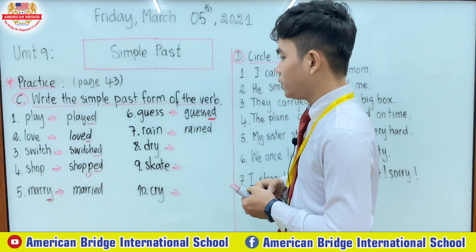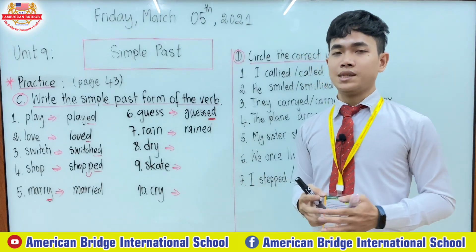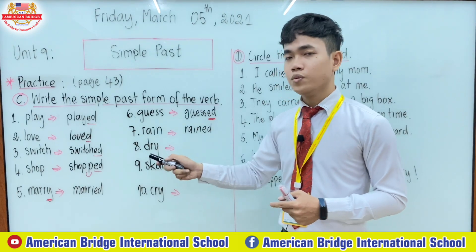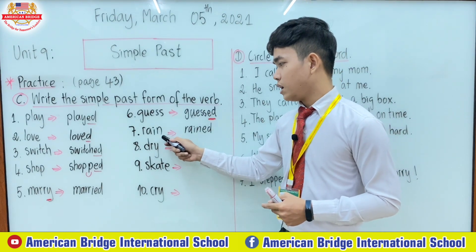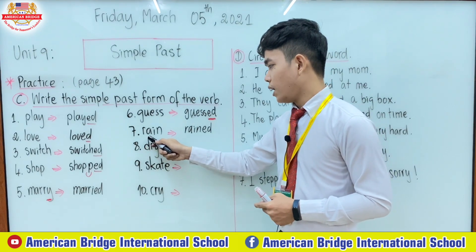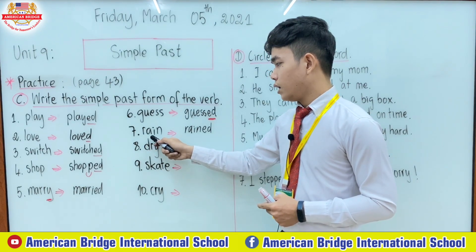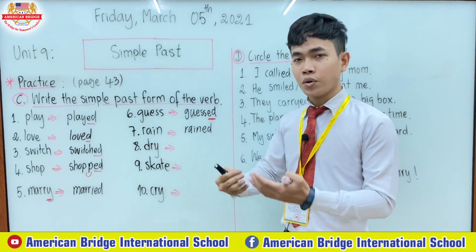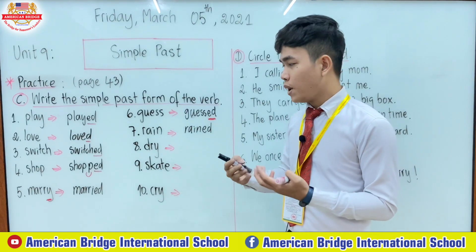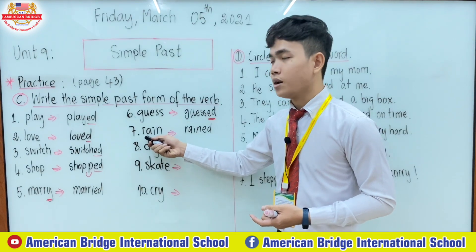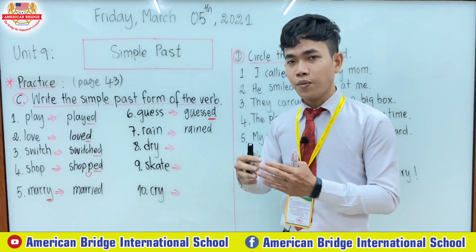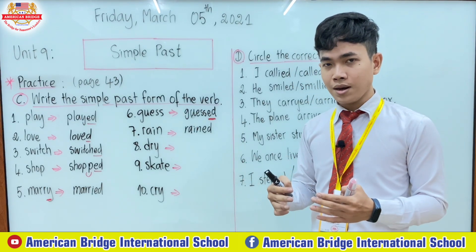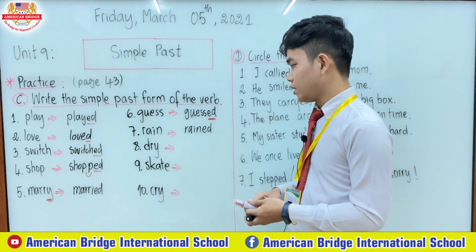Why don't we need to double consonant n? The reason is that in the verb 'rain', there are two vowels. We spell it r-a-i-n. Even though it ends with vowel i and n — where normally we'd double the consonant — the vowel before i is also a vowel. So we cannot double consonant n. You just add only -ed.